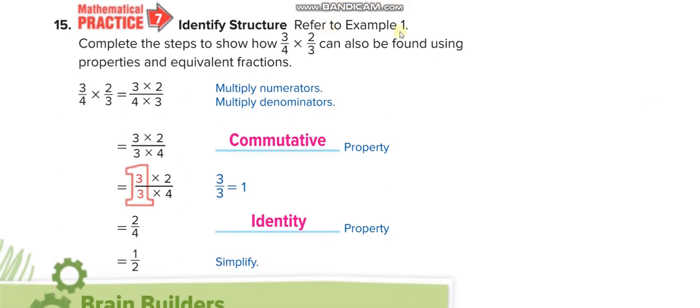Refer to example 1: Complete the steps to show how 3/4 times 2/3 can also be found using properties and equivalent fractions. You can write it as 3 times 2 over 4 times 3, then rewrite using the commutative property. 3/3 equals one whole.